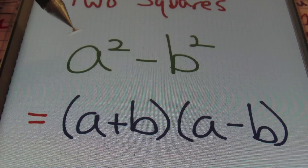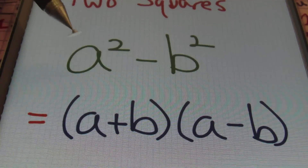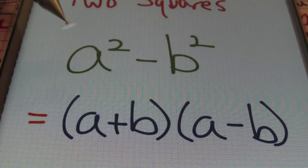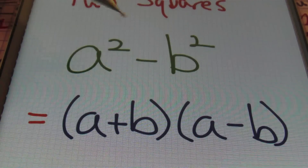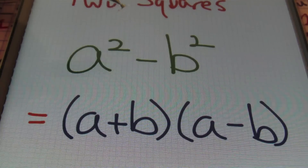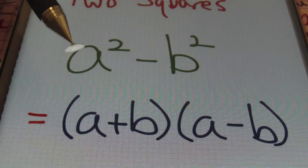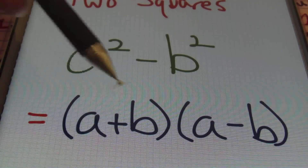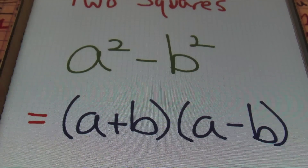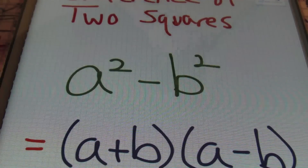So once again, when factoring a difference of two squares in the form of a squared minus b squared — meaning you have something squared minus something squared, a perfect square minus a perfect square — then you will always factor that into a plus b times a minus b. All right, so let's look at some problems.